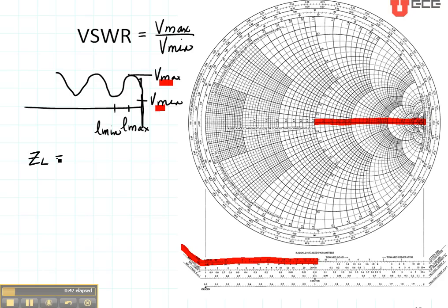Let's say that ZL is 100 plus j100 ohms on a 50 ohm transmission line. So we're going to plot 2 plus j2. That's right here where the imaginary part is 2 and the real part is 2. Here is our ZL value.